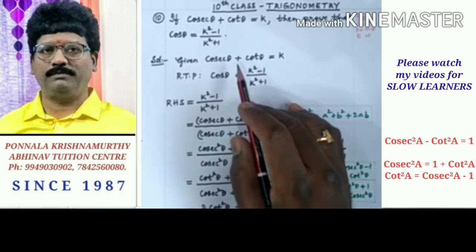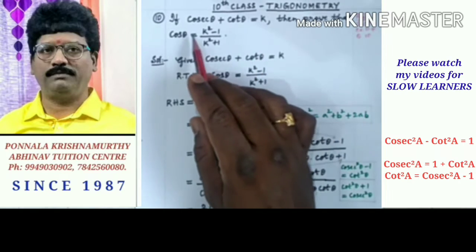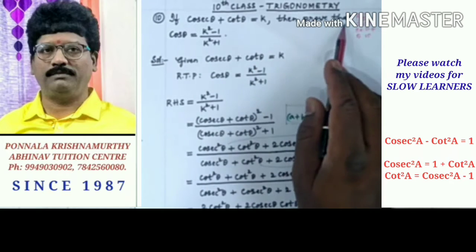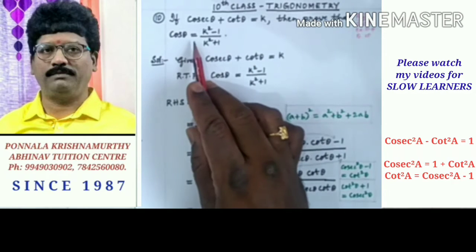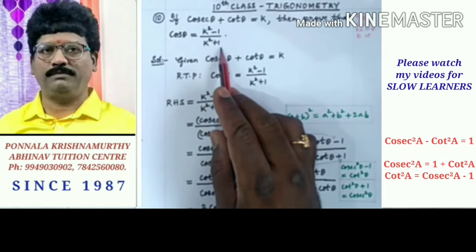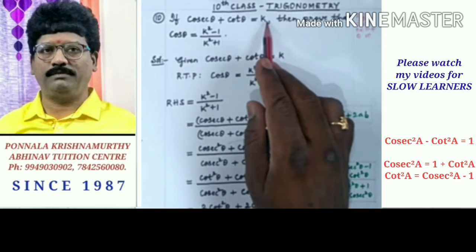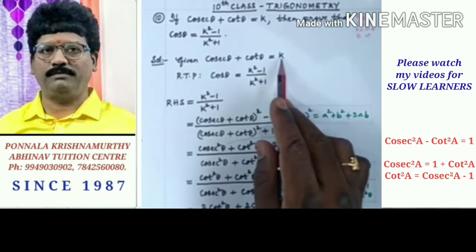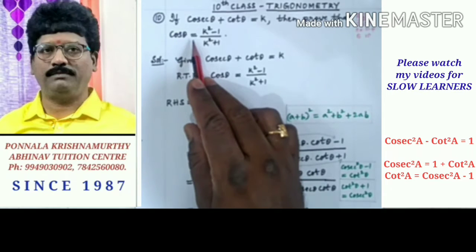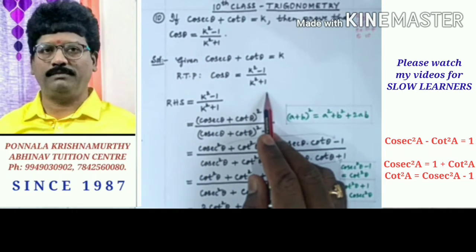Here we have a sum from 10th class Trigonometry. If cosec theta plus cot theta is equal to k, then prove that cos theta is equal to k squared minus 1 by k squared plus 1. Given cosec theta plus cot theta equal to k. Required to prove: cos theta is equal to k squared minus 1 by k squared plus 1.